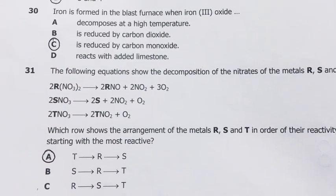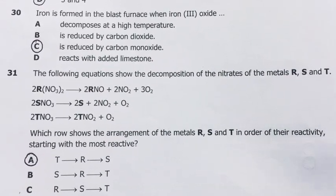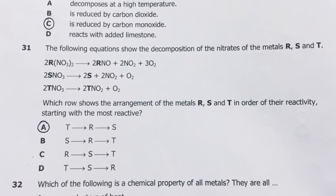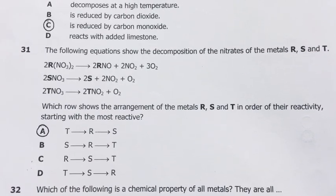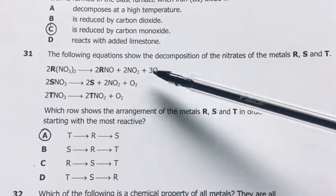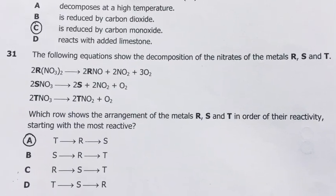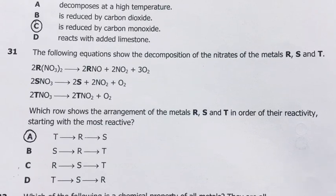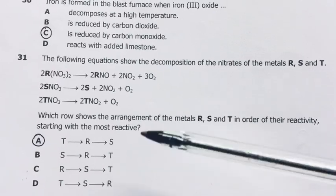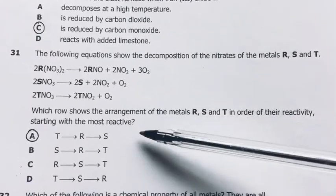Number 31. The following equations show the decomposition of nitrates of the metals R, S, and T. Which row shows the arrangement of the metals R, S, and T in order of their reactivity? T is the most reactive, followed by R, then followed by S. For you to answer this question, you should know the thermal stability of nitrates, also carbonates. Thermal stability of some metal compounds. So just by looking, you can tell, when a metal is very reactive, the thermal decomposition of its nitrate will be this. So my answer here is A.